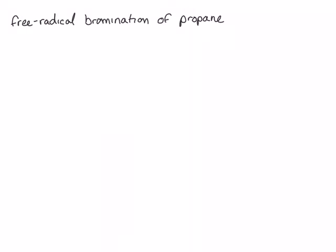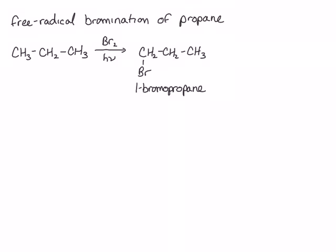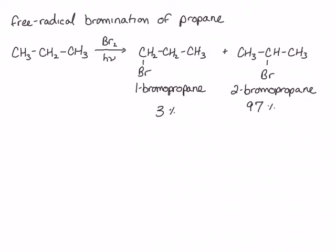Now let's look at a bromination example. We will consider the bromination of propane. Again, since propane has primary and secondary carbons, we get two products: 1-bromopropane and 2-bromopropane. Without understanding the mechanism, you might expect a three-to-one ratio of these products. However, the actual ratio we see is 3% of the 1-bromopropane and 97% of the 2-bromopropane. Because the ratio of 2-bromopropane to 1-bromopropane is higher than we saw in chlorination, we say that the bromination reaction is more selective.